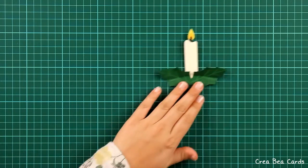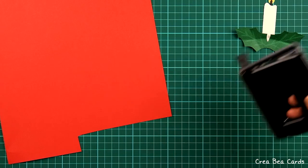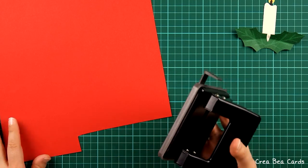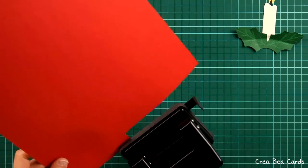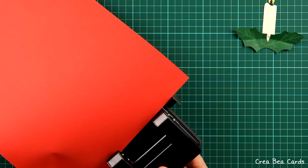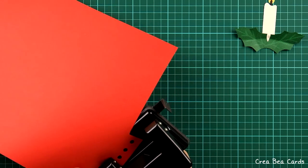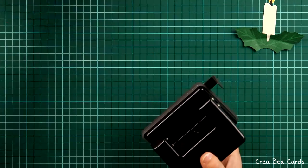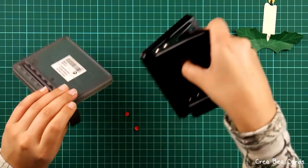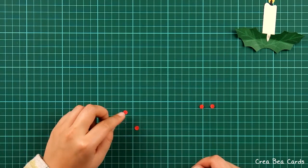Now it's time to create the berries. Take a sheet of red paper and a hole punch or a similar tool which has the same purpose. Make a few holes in the red paper. Open the hole punch and pick the three most pretty rounds. You might need to flatten them a bit with your fingers.